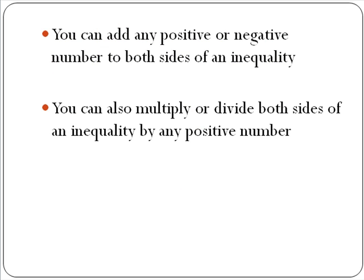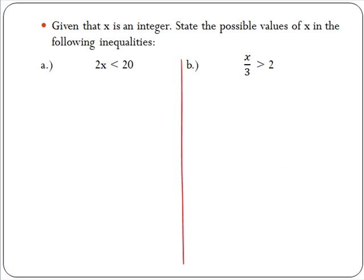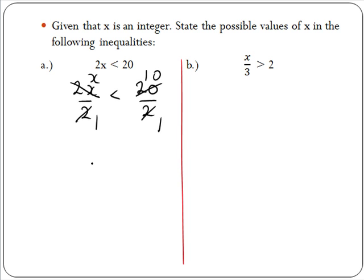We can also multiply or divide both sides of an inequality by any positive number — be careful, it must be a positive number. In part a we have 2x is less than 20. We divide both sides by 2 to get x by itself. So we have 2x divided by 2 is less than 20 divided by 2. Since 2 into 2x goes x times and 2 into 20 goes 10 times, we are left with x is less than 10.